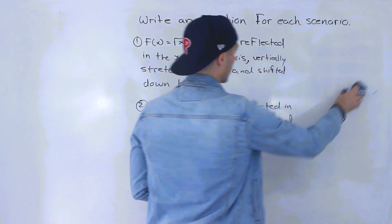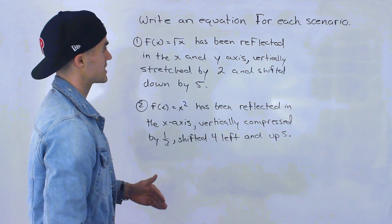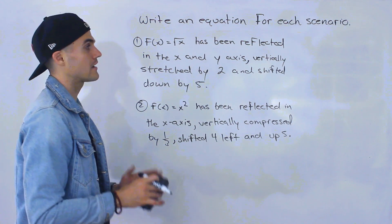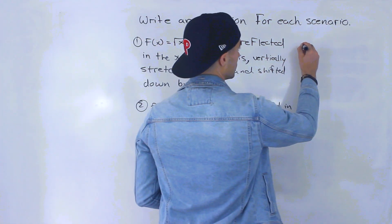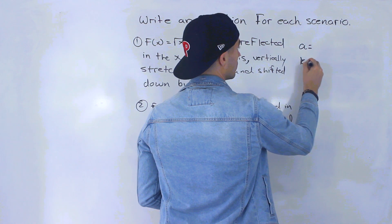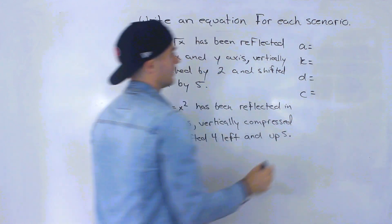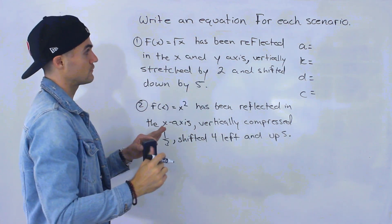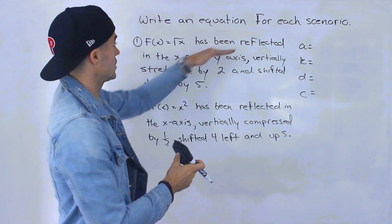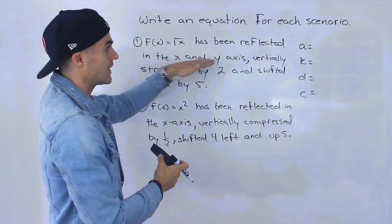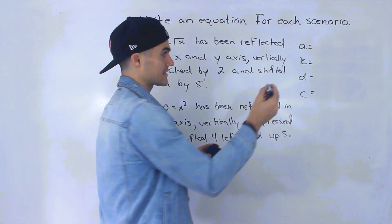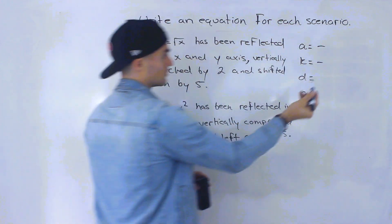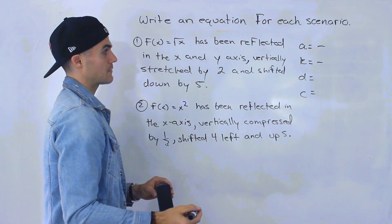Let's start with number one. We're told the square root of x has been reflected in the x and y axis, vertically stretched by 2, and shifted down by 5. What I like to do is write out those transformation values and go through each part of the sentence to fill in what needs to be filled in. Notice there's a reflection in the x and y axis.